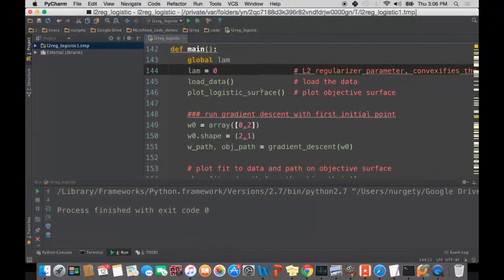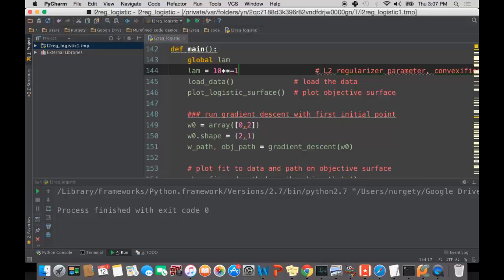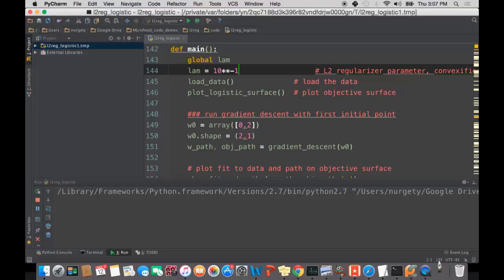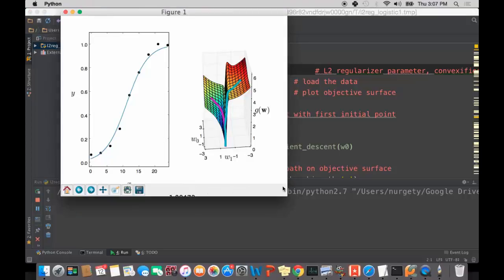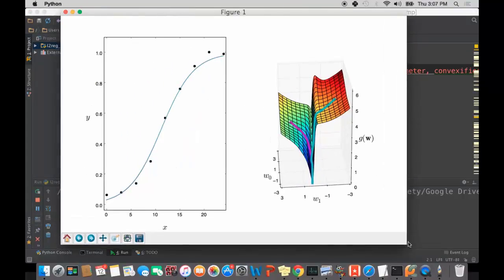Using the same wrapper, you can see what happens when you add an L2 regularizer to that non-convex cost. You can do that by simply playing around with this single parameter in the main function called LAM. It's going to be initially set to 0, but by changing it to something small and positive like 10 to the minus 1, we add an L2 regularizer, a convex function to that original non-convex cost. Run the code again, up's going to pop the same figure, but you see some things have changed.